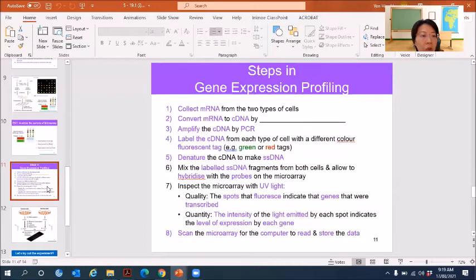So these are the basic steps that you have learned already. So you just have to write answers based on this one. So first you want to collect mRNA from the two types of cells. So in this case, you want to collect mRNA from the wild and the captive bred fish.